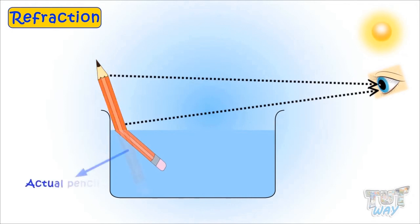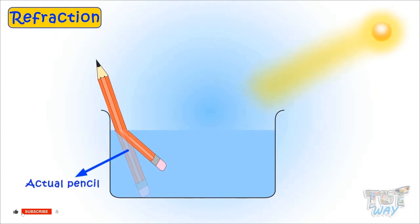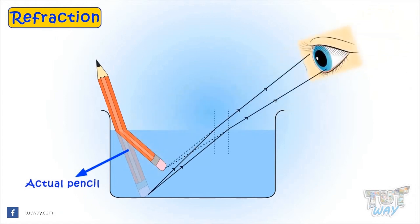But the other half of the pencil is in the water. The light falling on the pencil doesn't come to our eyes directly. It gets bent because it is coming from the water to the air. And this is why we see the other half of the pencil bent.